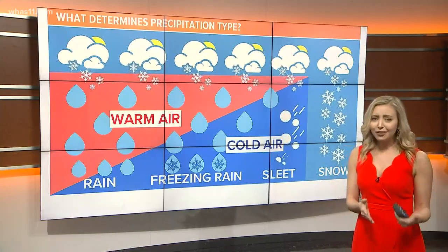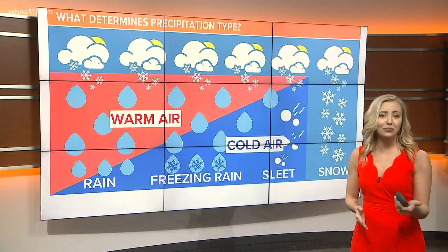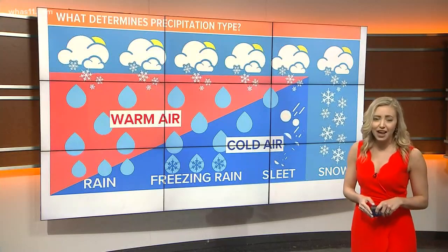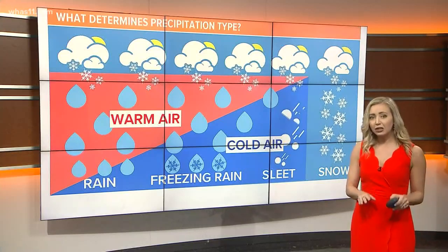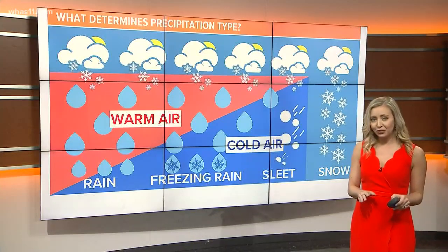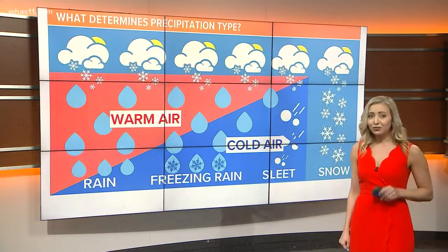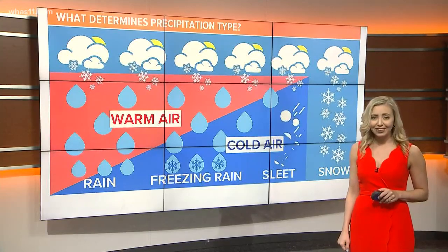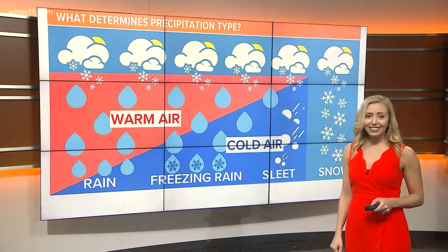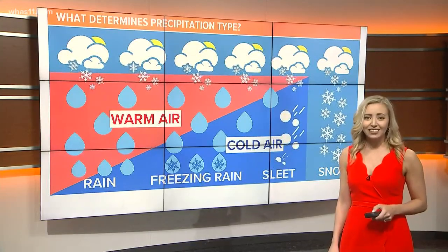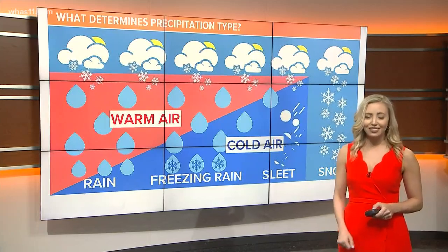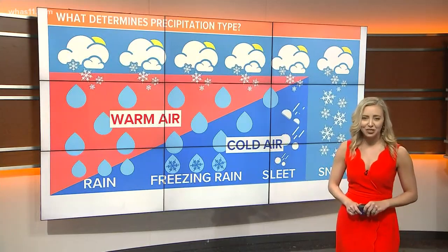Finally, snow. Snow reaches the ground when it only encounters layers of the atmosphere below 32 degrees. Did you know that no two snowflakes are alike? That is your WeatherWise lesson for today. For WHAS 11, I'm meteorologist Caitlin Fish.